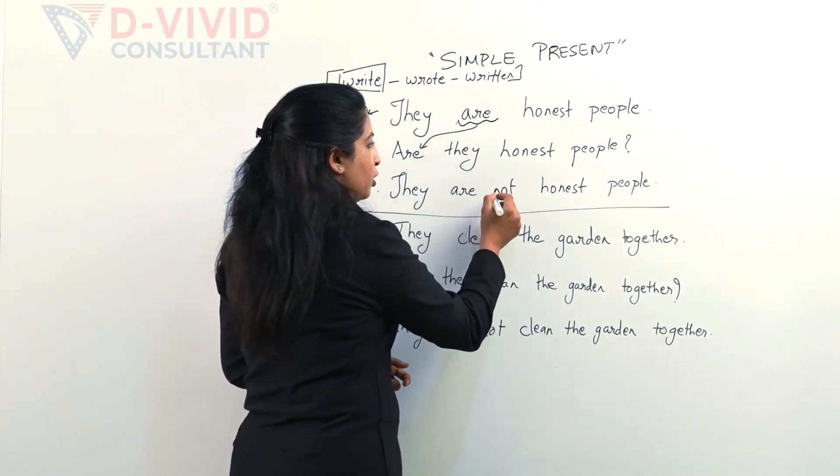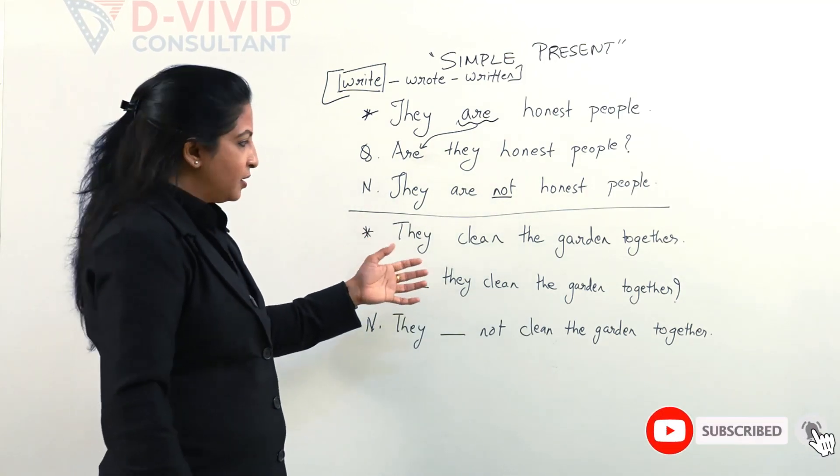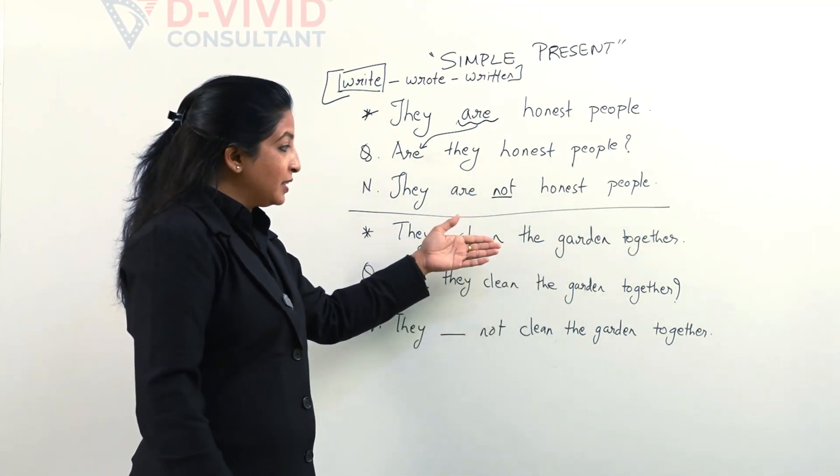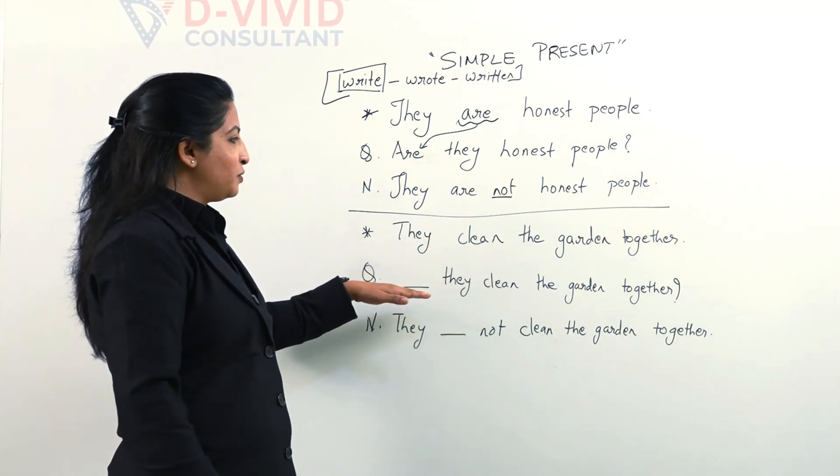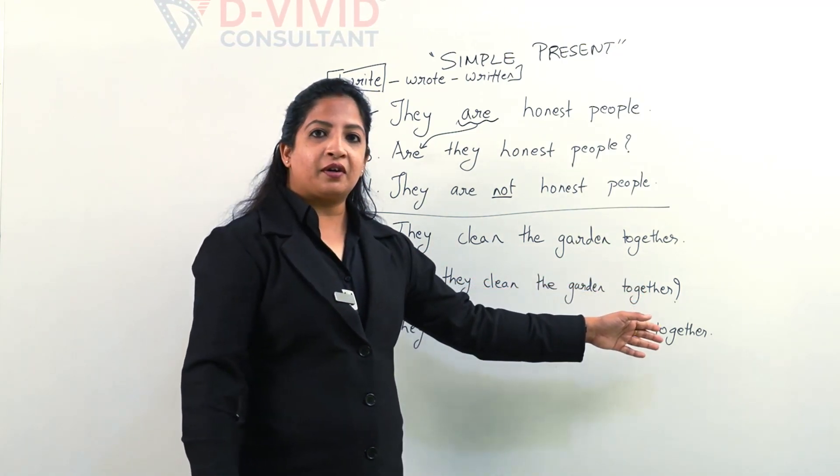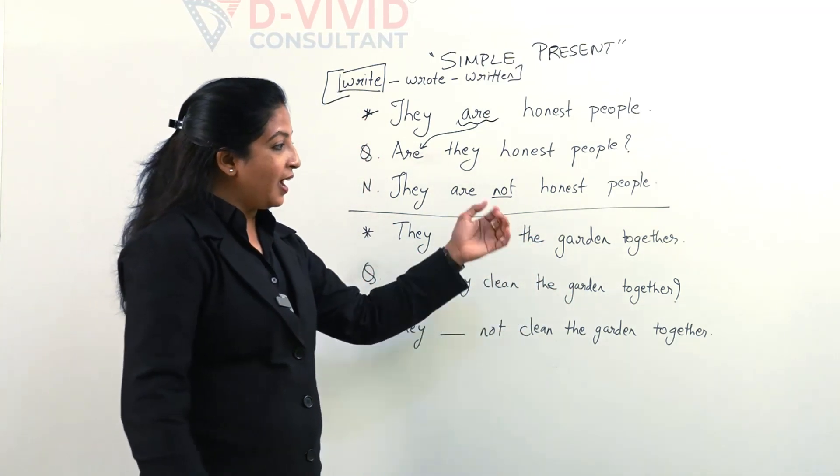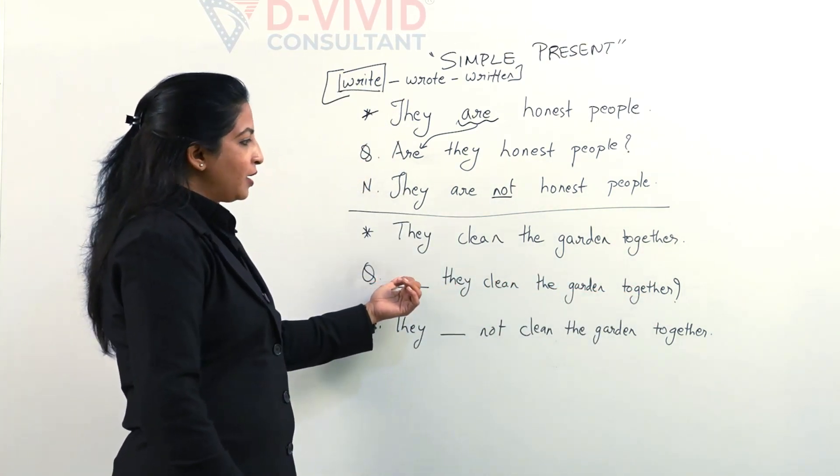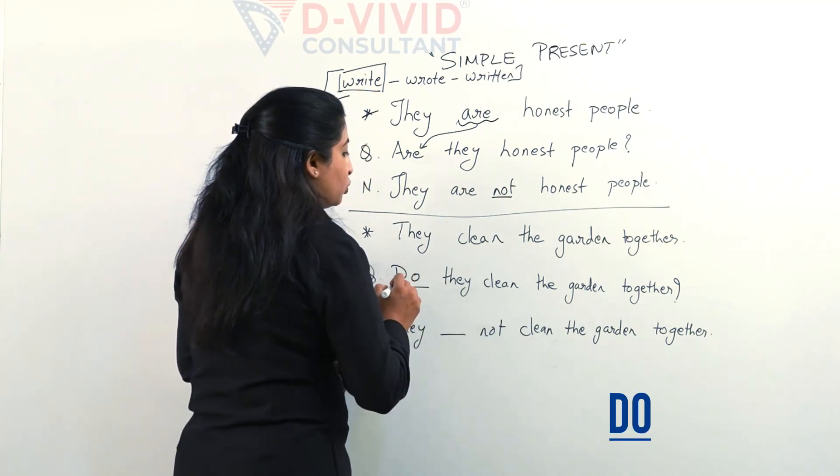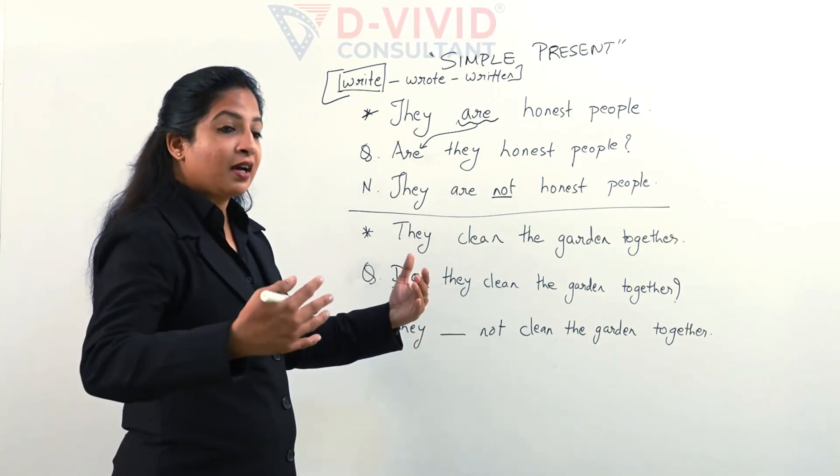I have this are over here to help me to make this sentence a question, an interrogation. And if I want to convert it into a negative, still the sentence itself is independent to convert itself into negative. They are not honest people. But if you closely see the second sentence that I have written, they clean the garden together. If I have to change this sentence into a question, there is a fill in the blank for you. Do they clean the garden together?